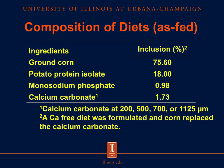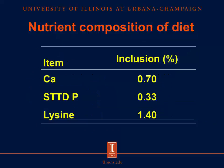The composition of the diets is as follows. These diets were corn and potato protein-based diets. Corn was included at 75.6% of the diet, and potato protein was included at 18% of the diet. Our primary source of phosphorus in the diet came from monosodium phosphate, included at 0.98% of the diet. Calcium carbonate was included at 1.73% of the diet. In addition, about 4% of the diet came from other ingredients, including soybean oil, salt, and our vitamin and mineral premix. The calcium carbonate in the diet was either ground to 200, 500, 700, or 1,125 microns for each respective experimental diet. Additionally, a calcium-free diet was formulated, and calcium carbonate was replaced by corn. Calcium was formulated at 0.7%, standardized digestible phosphorus was formulated at 0.33%, and lysine was formulated at 1.4%.